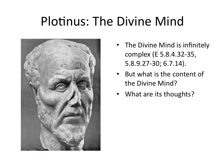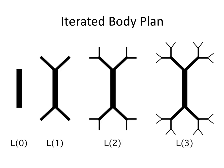Back to Plotinus — the divine mind is infinitely complex. He says this in many places in the Enneads. But what is the content of this infinite complexity? What are the thoughts of the divine mind? For this, let's look at some iterated things.